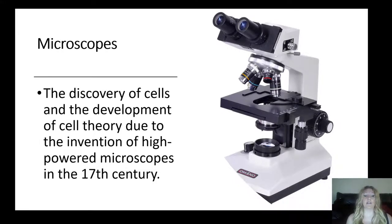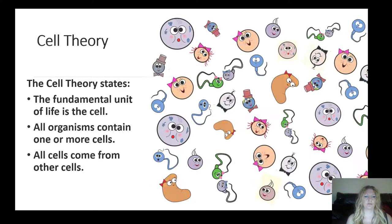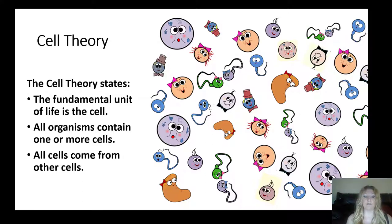The discovery of cells and the development of cell theory was largely due to the invention of high-powered microscopes in the 17th century. This led to the development of cell theory, which has three main statements: the fundamental unit of life is the cell; all organisms contain one or more cells; and all cells come from other cells.